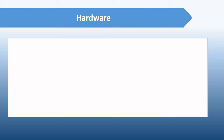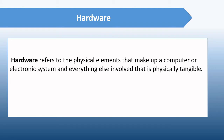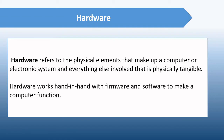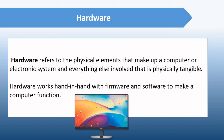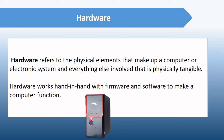Hardware is the opposite of software — hardware refers to the physical elements that make up a computer or electronic system and everything else that is physically tangible. Tangible means you can touch it physically. This includes the monitor, hard drive, memory, and CPU. Hardware and software are interconnected, which means without software the hardware would have no function, and without hardware to perform tasks directed by software via the CPU, software would be useless too. Therefore, hardware and software are interconnected.